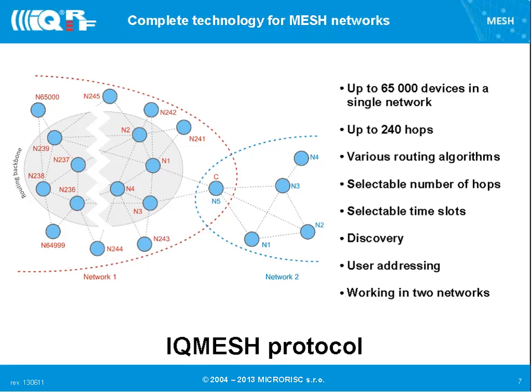Bonding must currently be done within direct range of the coordinator — meaning 50 to 100 meters. You run the bonding function simultaneously on nodes and on the coordinator, they communicate and get bonded. Based on that, no one else can read the communication in the network. The module or node will receive only communication addressed directly to it or broadcast to everybody.